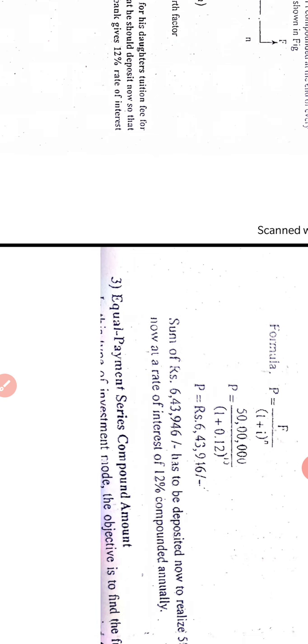So now if you substitute the values, you will find out P is equal to F divided by one plus i raised to n. Here the future amount what we require is 50 lakhs, i is 12 percent, that is 0.12, and n is equal to 10 years after 10 years. So it is 50 lakhs divided by 1 plus 0.12 raise to 10. So the amount becomes 6 lakh 43,000 rupees. So if Mr. X invests 6 lakhs 43,000 rupees today in the bank which gives him interest rate of 12 percent compounded annually, then after 10 years he will get the amount of 50 lakh rupees.